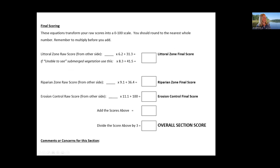The final scoring is done back at home. You add up all the points and do some quick math to end up with a score on a zero-to-one-hundred scale. That's easy to explain — like a grade on an exam. A score of 100 means you did really well; a score of 60 is closer to failing.